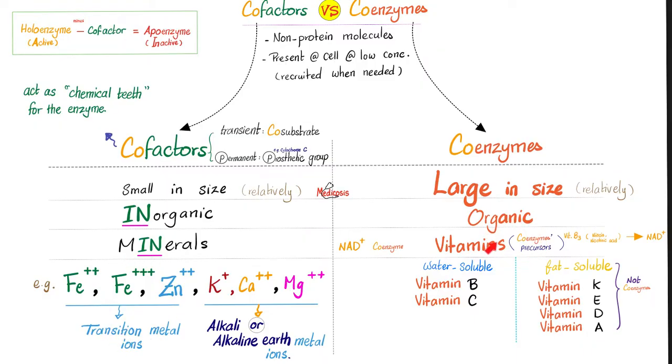The vitamins are divided into water-soluble, like vitamin B, which has many subtypes, and vitamin C. The fat-soluble vitamins are K, E, D, and A.